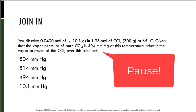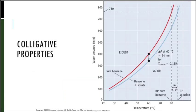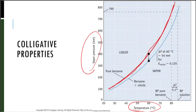See if you can solve this one — pause the video and check your answer. This graph shows vapor pressure on the y-axis versus temperature. We can see what happens to the vapor pressure of pure benzene compared to benzene with a solute — there is a clear difference. The vapor pressure is lowered when we add that solute.